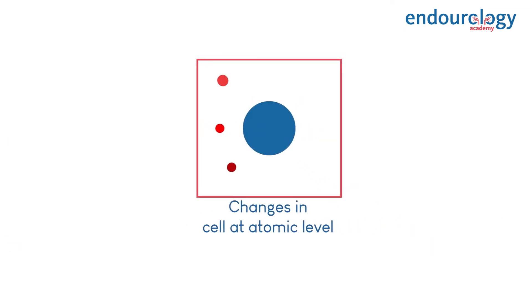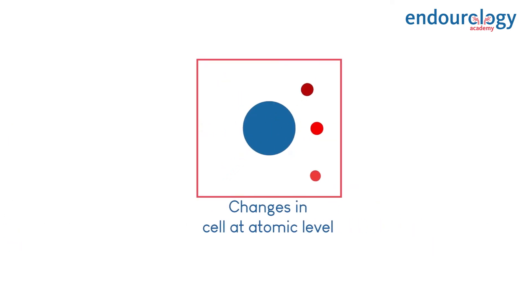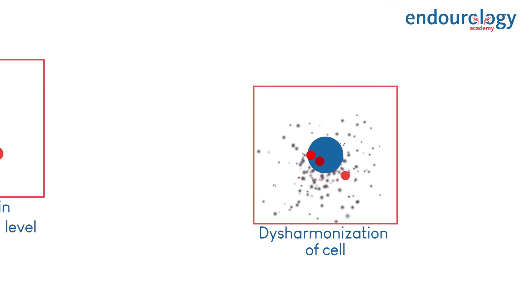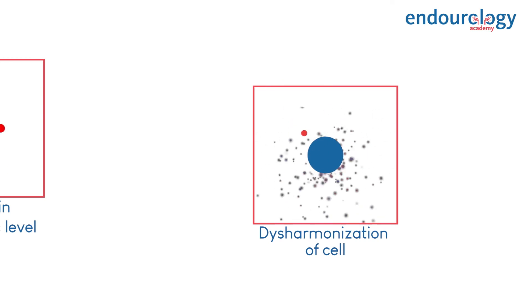The human body absorbs this scattered radiation. Once absorbed by the human body, scattered radiation triggers cellular or atomic level changes, leading to disharmonizing of the cell's nuclear structure.